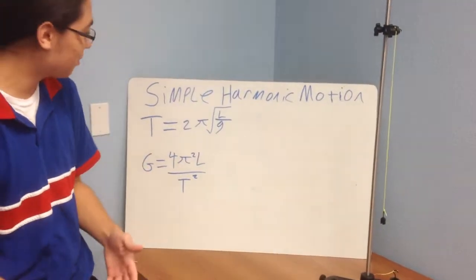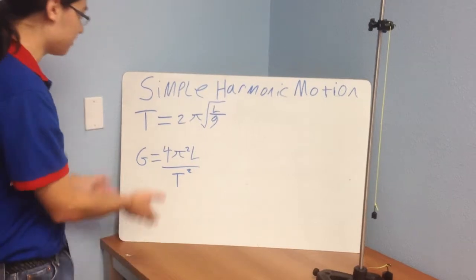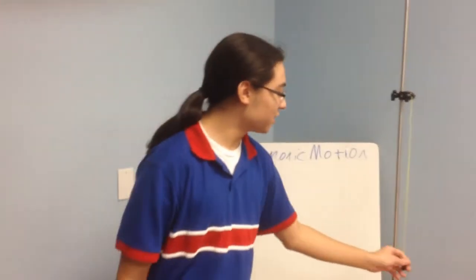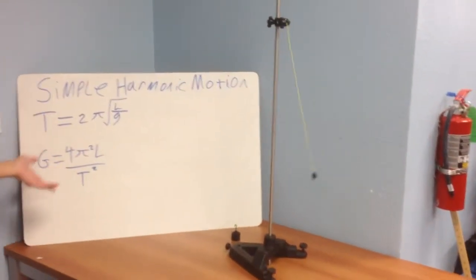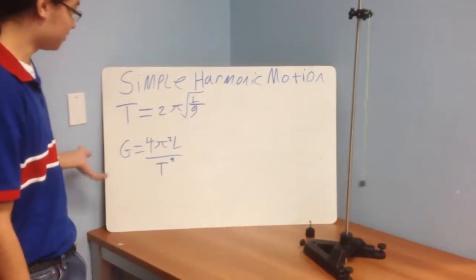But you can rearrange the formula to find gravitational acceleration how I did it here. Since we know that time is one full swing of the pendulum, we will have to implement it into the new revised formula to find gravitational acceleration.